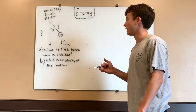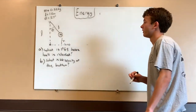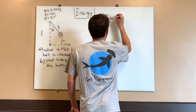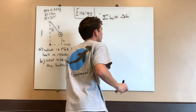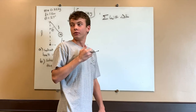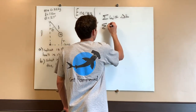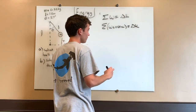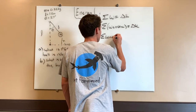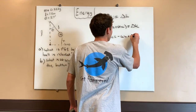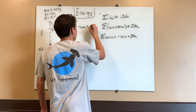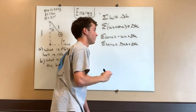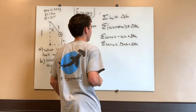Now let's go into part B: what is the velocity at the bottom? We need to figure out a relation between kinetic energy, which deals with velocity, and our potential energy. We know those are the two energies we're dealing with. Starting with the work-energy theorem, the sum of works equals the change in kinetic energy. We split this into conservative plus non-conservative work equals delta K, giving us: non-conservative work equals negative conservative work plus delta K. And since negative conservative work equals the change in potential energy, we have: W non-conservative equals delta U plus delta K.